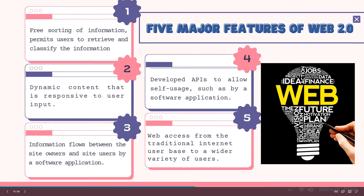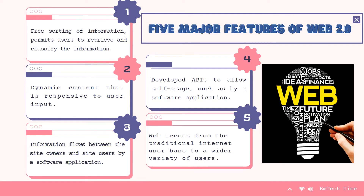The five major features of Web 2.0 are: first, free sorting of information which permits users to retrieve and classify information collectively; second, dynamic content that is responsive to user input; third, information flows between site owner and site users by means of evaluation and online commenting; fourth, developed APIs to allow self-usage such as by software applications; and lastly, web access leads to concern different from the traditional internet user base to a wider variety of users.